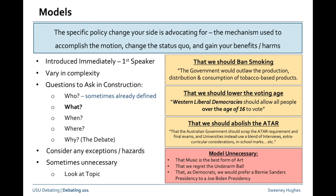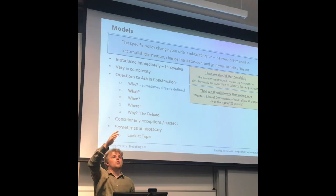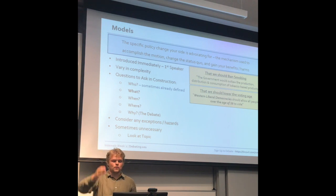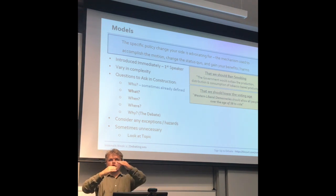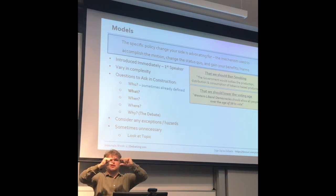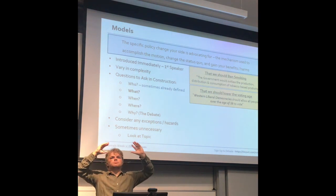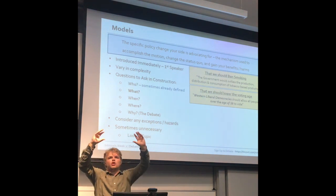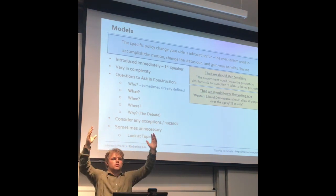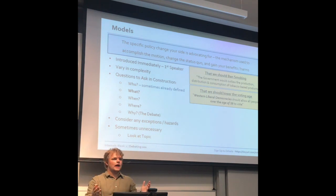You might have a debate that gives you more room to define the who and the where, such as 'we should lower the voting age.' You'd say Western liberal democracies should allow all people over the age of 16 to vote. Note that you're not just saying we should lower the voting age — you're defining specifically what you're lowering it to, and also explaining where this policy change could take place.